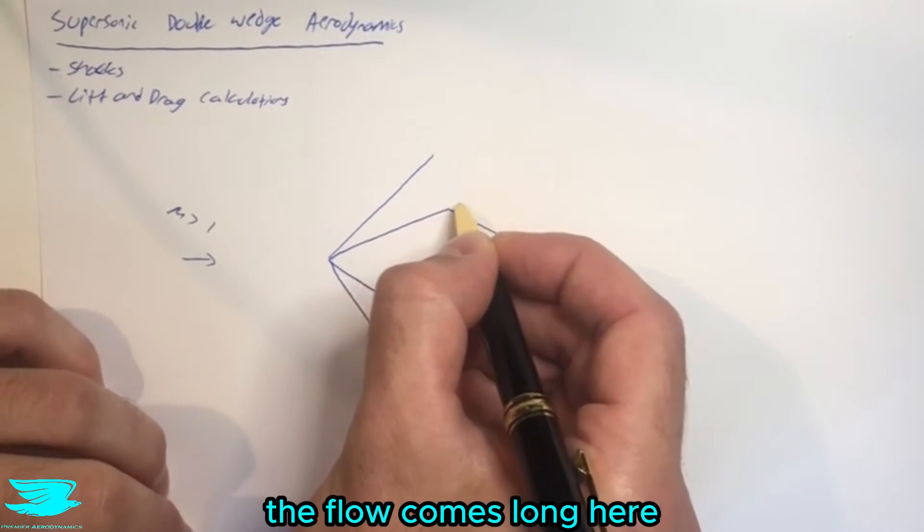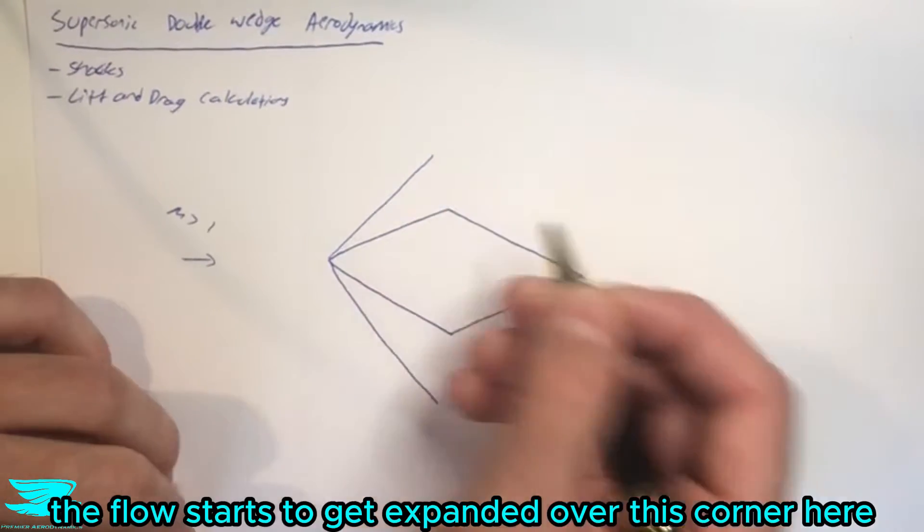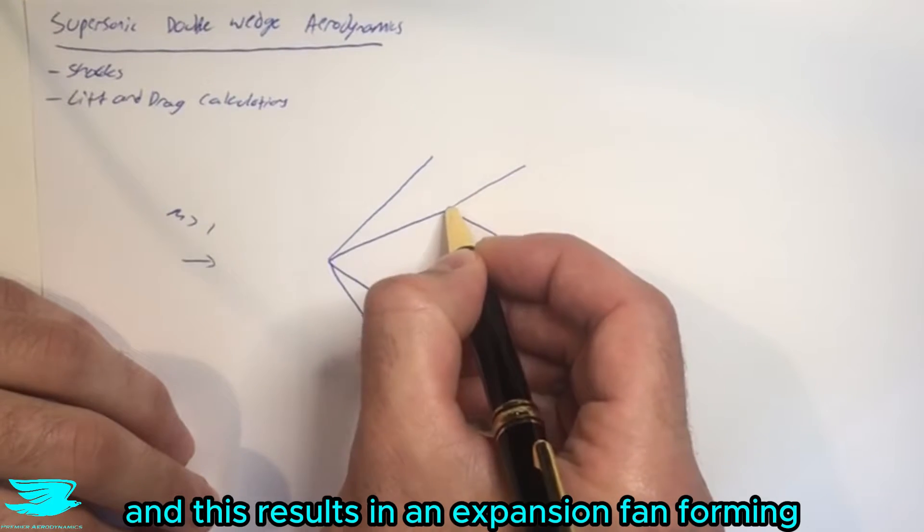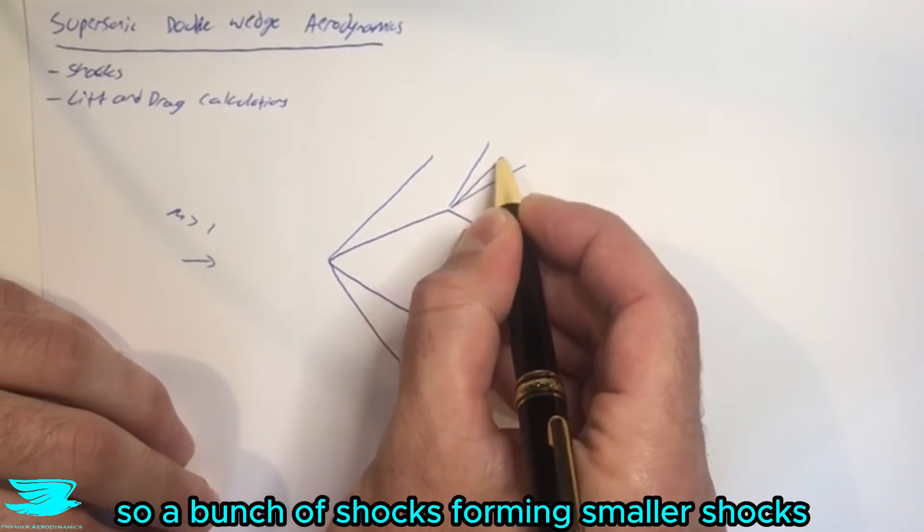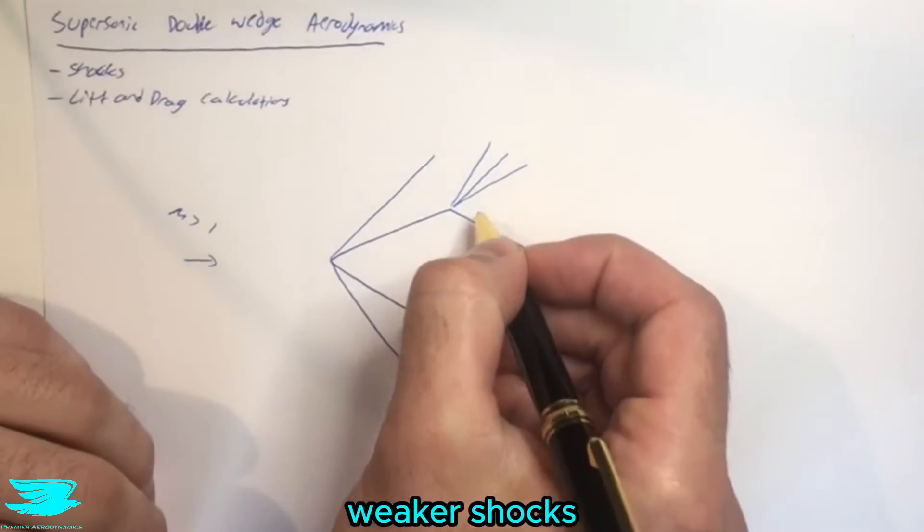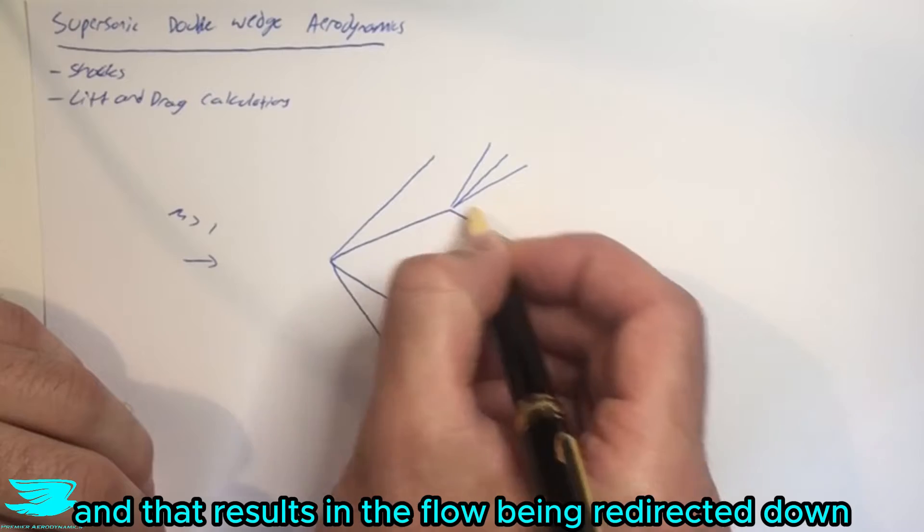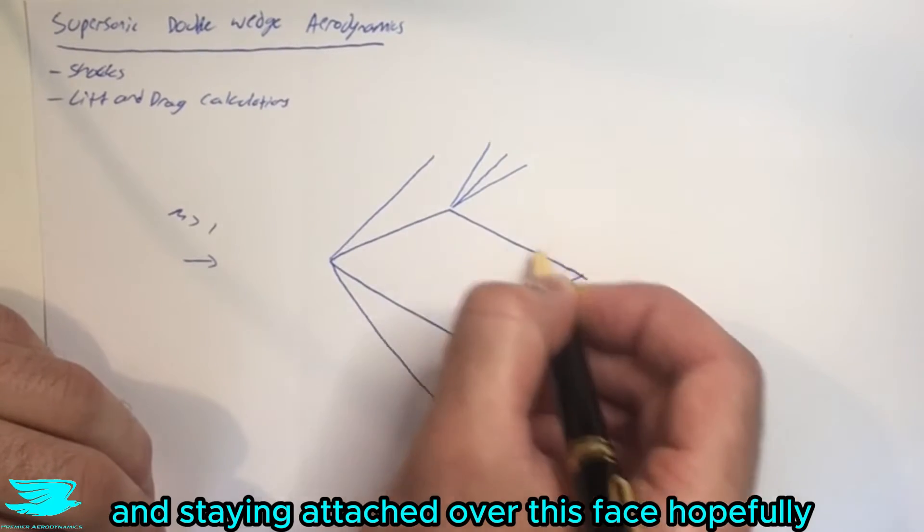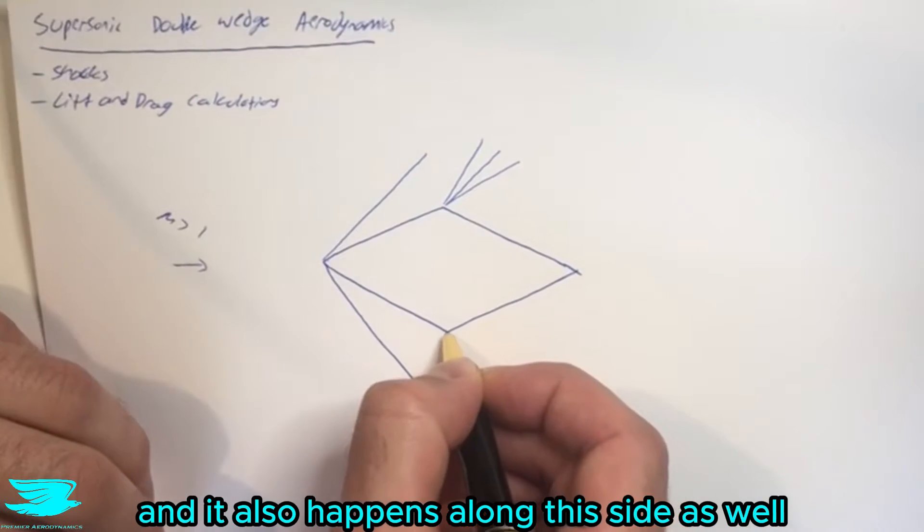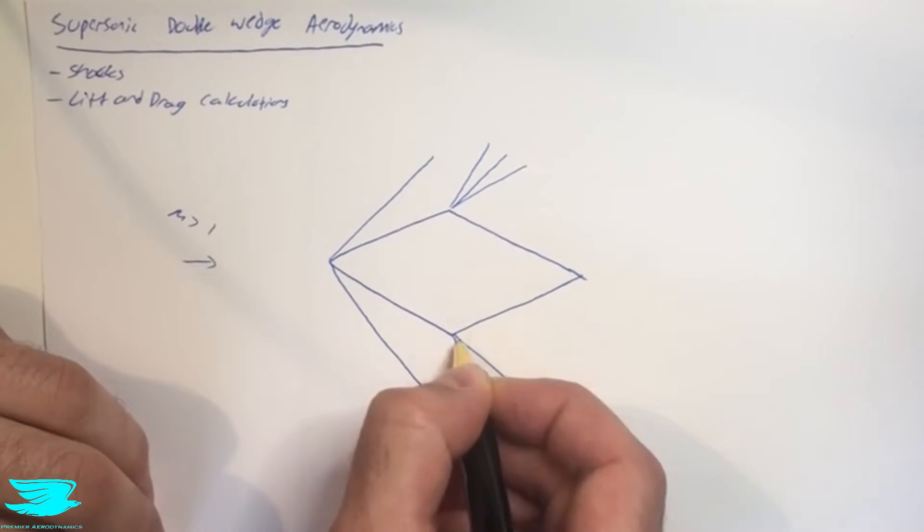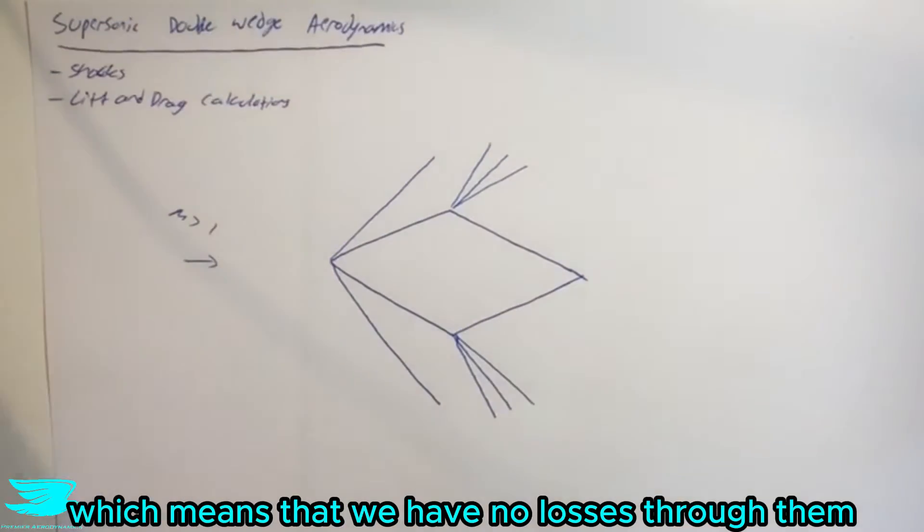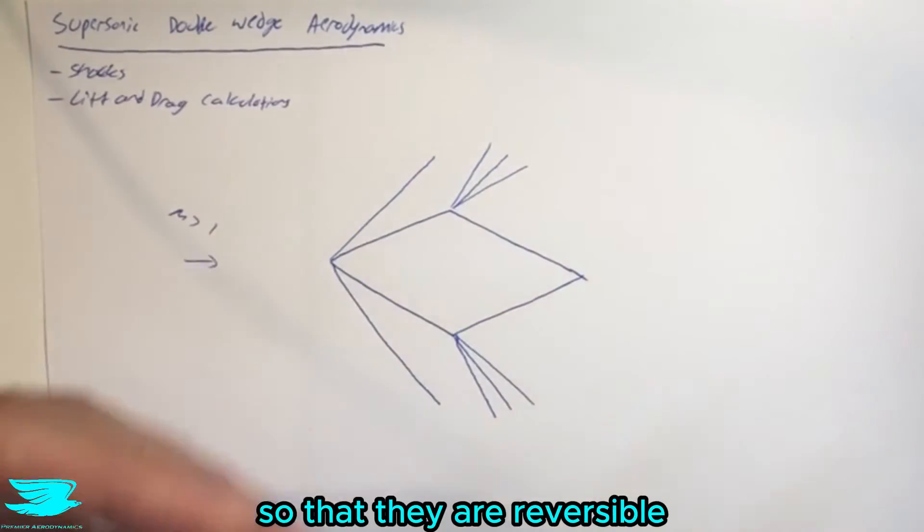And then as we go along, the flow comes along here. Now the flow starts to get expanded over this corner here. And this results in an expansion fan forming. So a bunch of shocks forming, smaller shocks, weaker shocks. And that results in the flow being redirected down and staying attached over this face, hopefully. And it also happens along this side as well. And expansion fans are usually isentropic, which means that we have no losses through them so that they can be reversible.